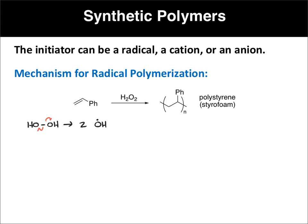So the way that this would occur — in this case, this is styrene, where we have the double bond with the phenyl group — what happens is this will get started by the OH adding to the double bond. This is a radical addition. There are two electrons in that pi bond; one will pair up with the OH, and the other will put a radical on the more substituted carbon that has the phenyl attached.